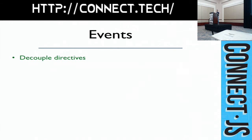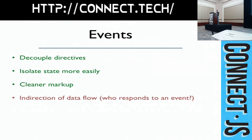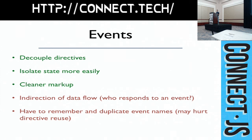Good things about the event approach: we were able to decouple directives even more than with isolate scopes — less use of two-way bindings and callback bindings. We were able to isolate state more easily, moving main-image state into the main-image directive and image-favorites state into image-favorites — no longer in some global object. The markup was cleaner. The downside: this introduces a lot of indirection. It may be harder to immediately understand how information is getting passed along — you have to follow event pathways. And you potentially have to remember and duplicate event names, which can be problematic.